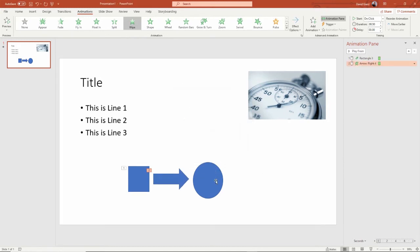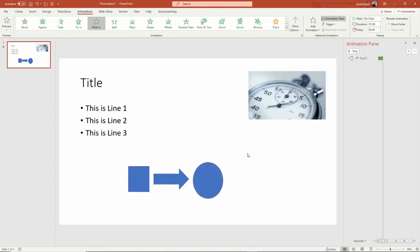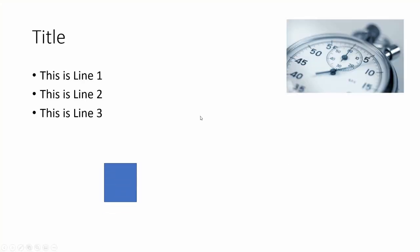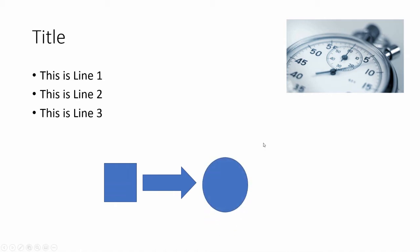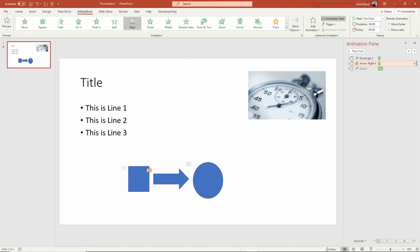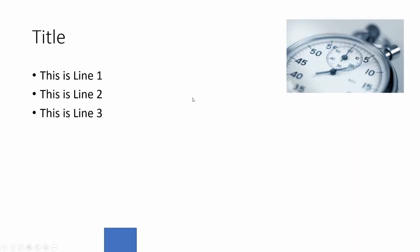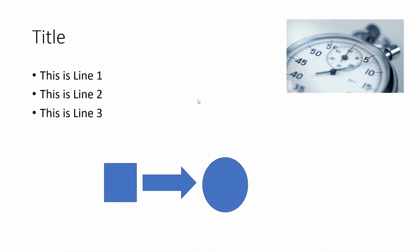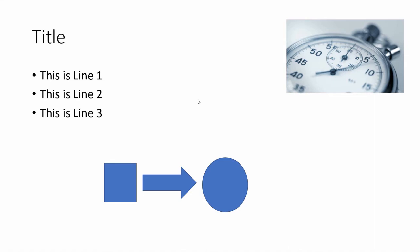And then for the third object, I'll add a float in for the entrance. So as I run this: one click flies the first in, second click it wipes from left to right, and the third one floats in. In fact, this would be a really good one to do one after another — start after previous, start after previous — and now one click triggers a pretty nice sequential animation indicating the rectangle leads to a circle.